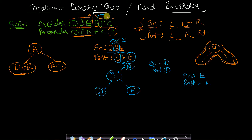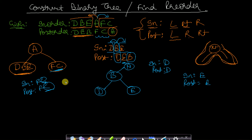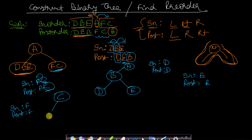Now we make a call to the right side of A with F and C. In-order contains F, C and post-order also contains F, C. C is the last node in post-order, so C is the root. In the in-order, F is to the left of C, so C will have F as its left child. A recursive call creates node F. There is no node to the right of C, so it will be null. C then returns to A.